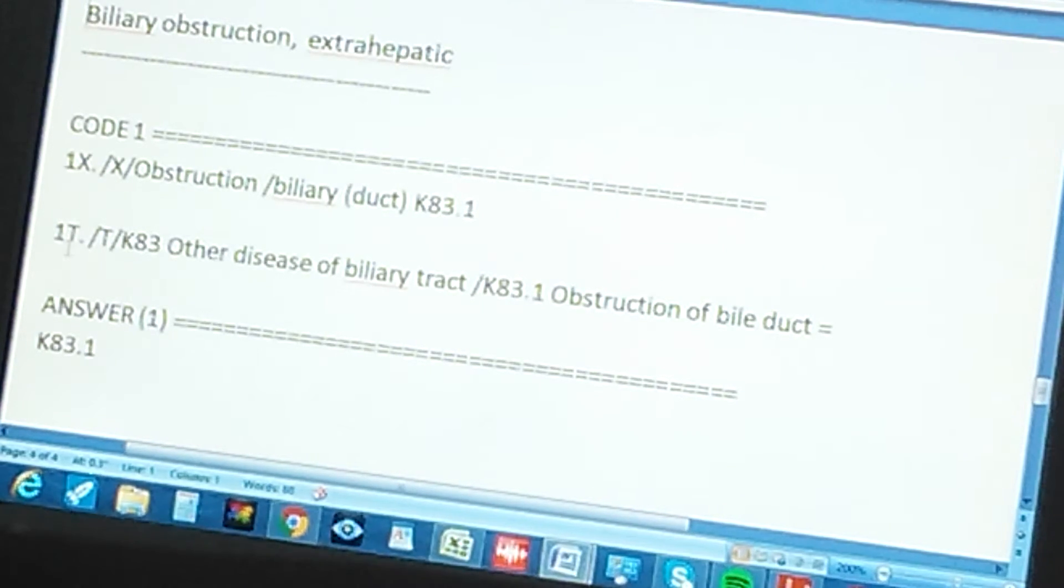So the code through the tabular goes like this: in the tabular, you start with the three first characters that you found in the index. And what does it tell you? Other disease of biliary tract.